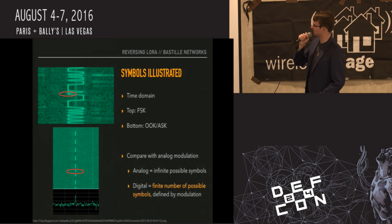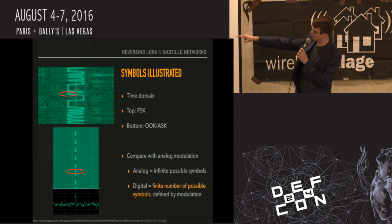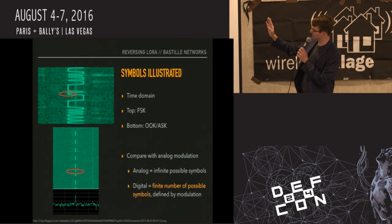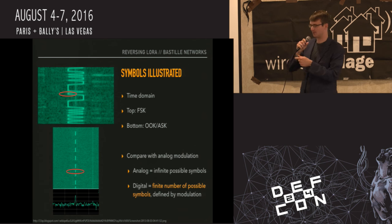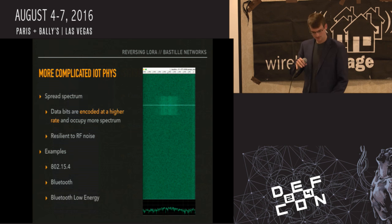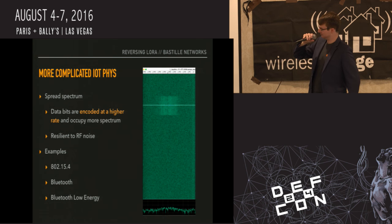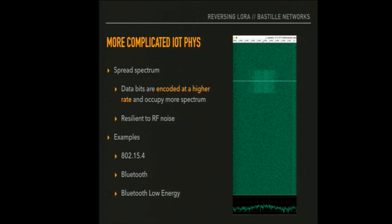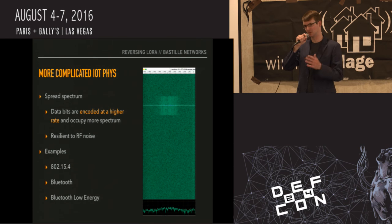To illustrate symbols: on top we have frequency shift keying, on the bottom on-off keying. With FSK, a symbol representing a single bit is the power being on one frequency versus the other at some instant in time. With OOK, it's the presence of the signal. There are more complicated PHYs as well — 802.15.4 spreads its information across a wider spectrum to increase resiliency and get low power features. Other complicated PHYs include Bluetooth and Bluetooth Low Energy which do frequency hopping.